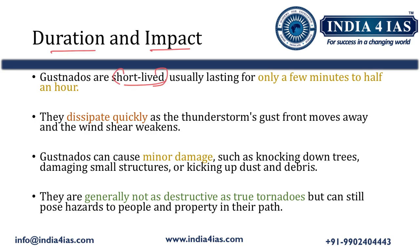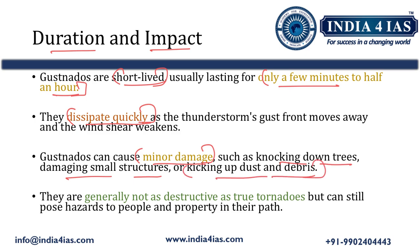Gustanados are short-lived, usually lasting only a few minutes to half an hour before they dissipate quickly. Their impacts include minor damages such as knocking down trees, damaging small structures, and kicking up dust and debris. They are generally not as destructive as true tornadoes, but can still pose hazards to people and property, as happened in the Thrissur district of Kerala.